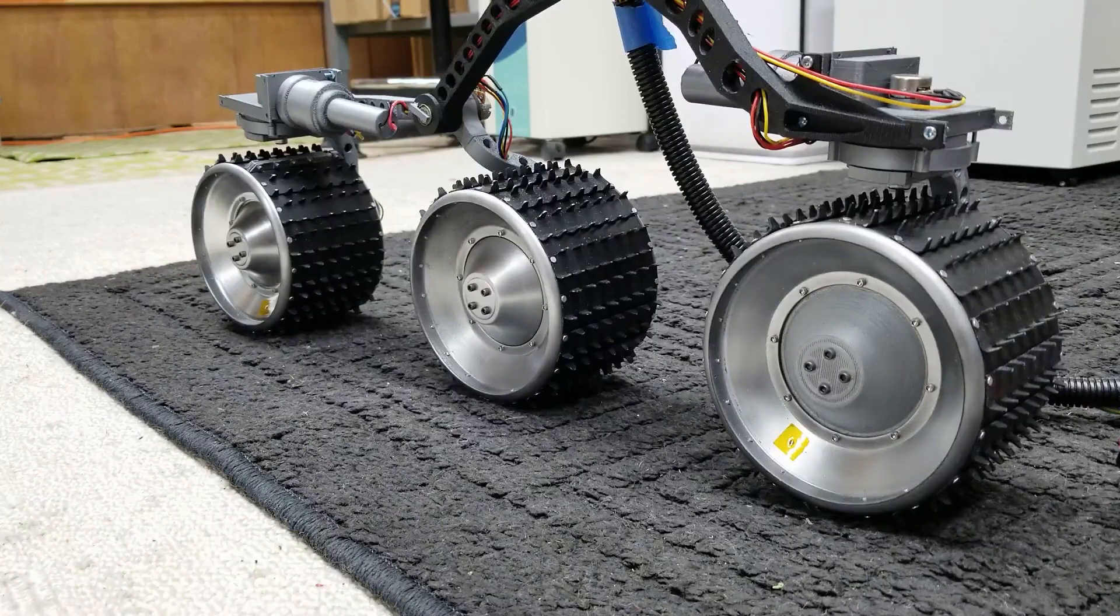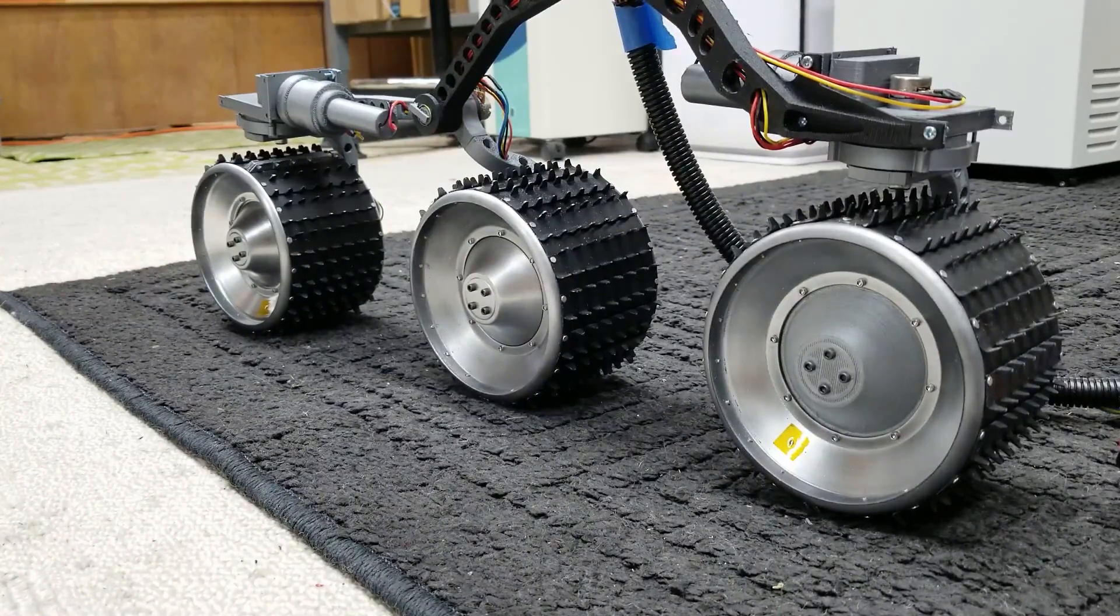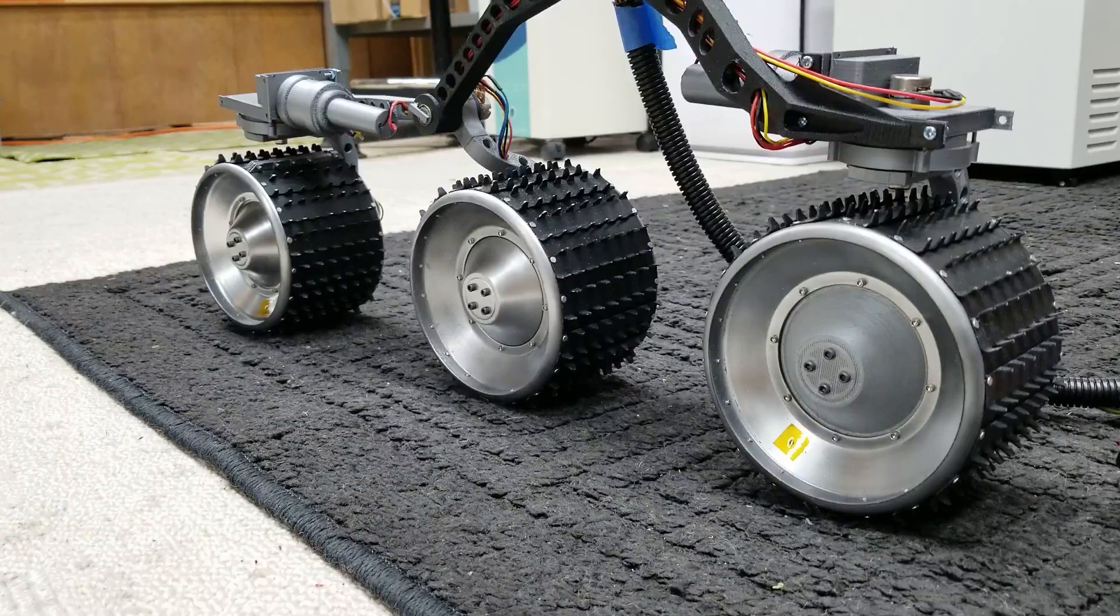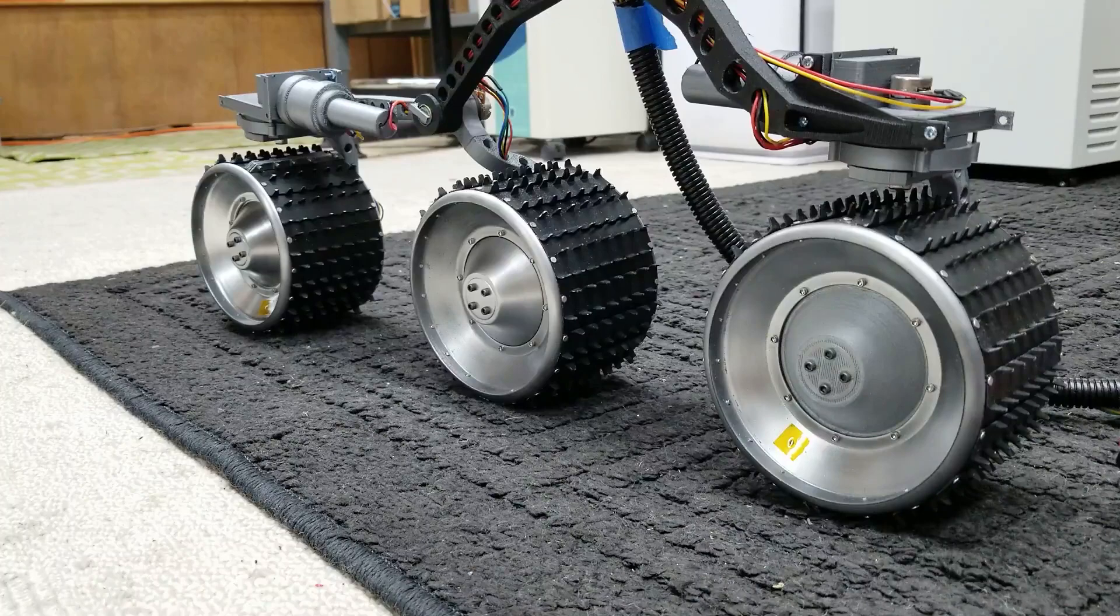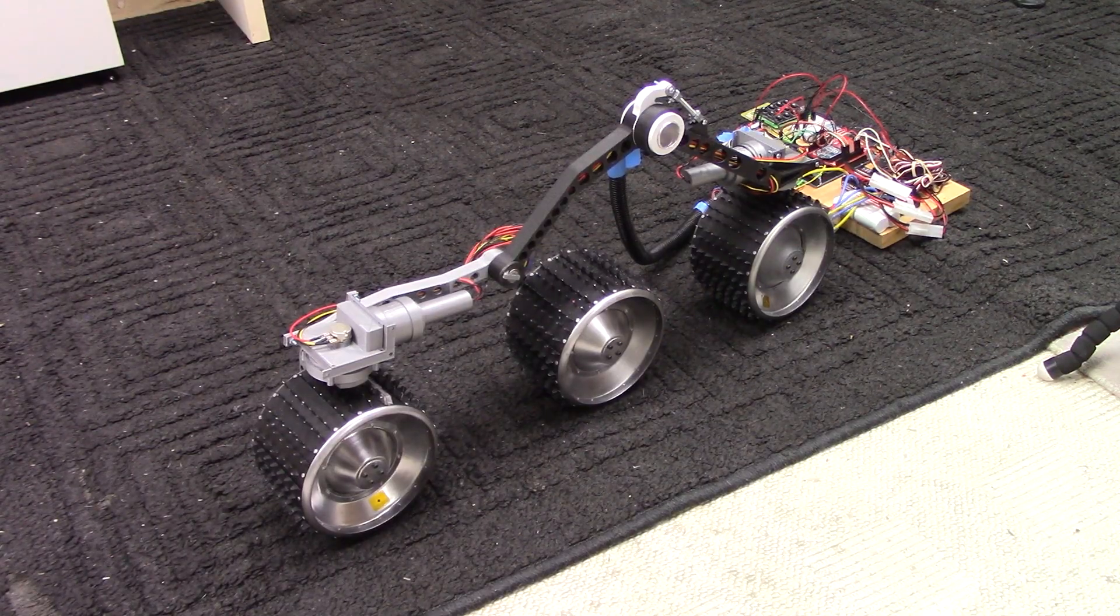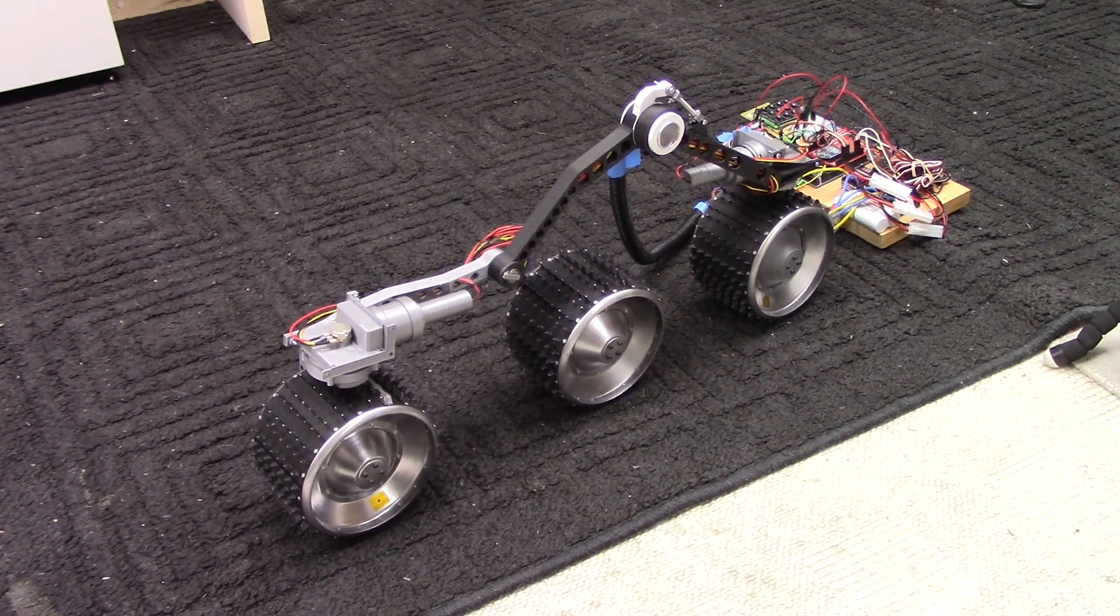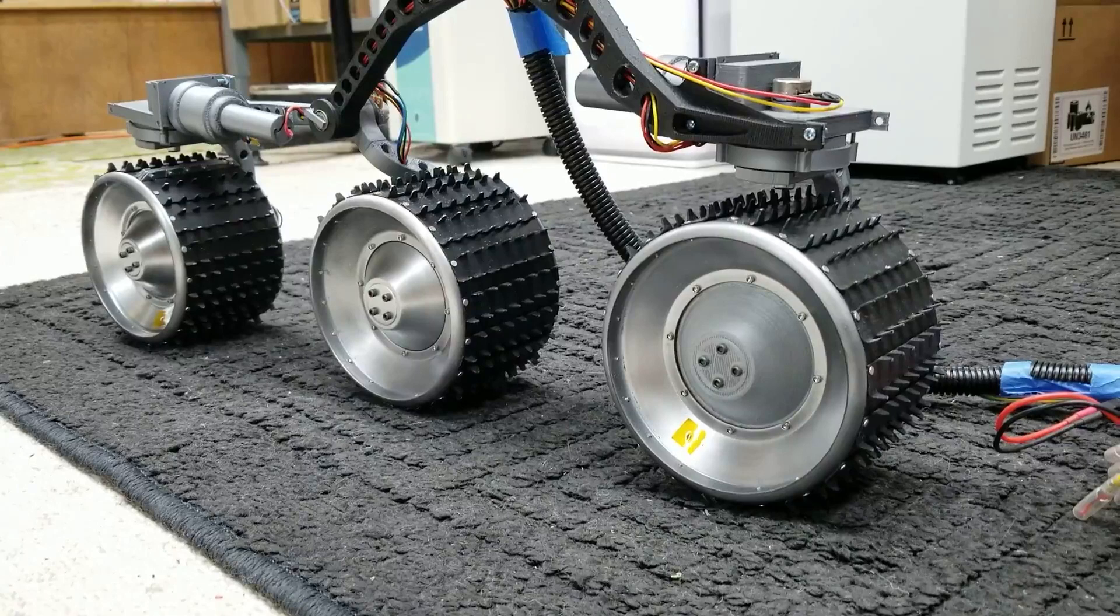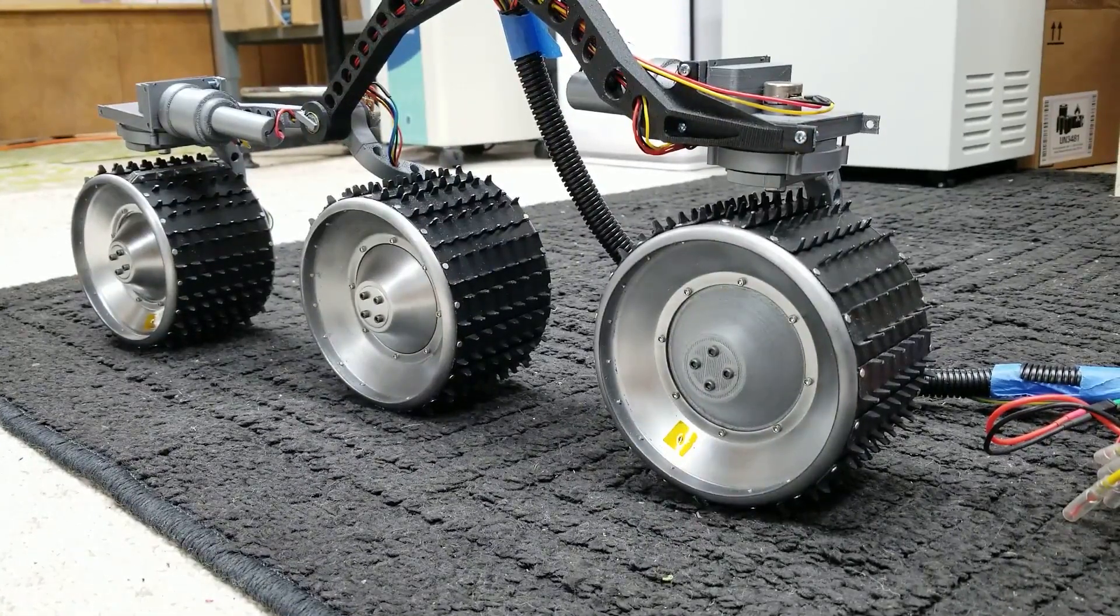All right, so this is the carpet from the previous video that I kind of liked because it's grippy. There's a lot of traction here. So I think this would be a good place to test the steering capabilities of this thing, make sure that nothing breaks. I feel like this is kind of a good view for you guys to see if anything breaks.